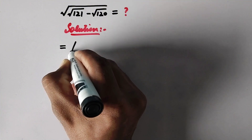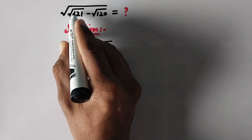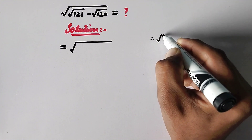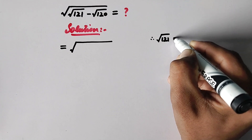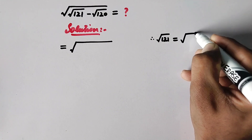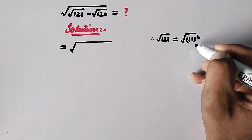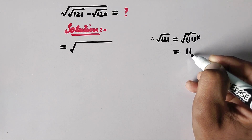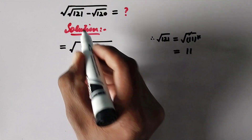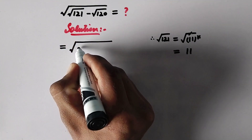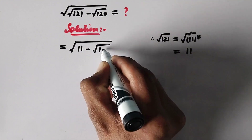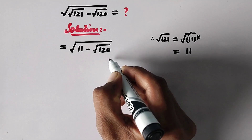In the first step we will write that square root of 121 can be evaluated as: 121 is equal to square root of 11 squared, and now this square root will cancel this square and it will be equal to 11. So now we can substitute square root of 121 with 11, giving us 11 minus square root of 120.